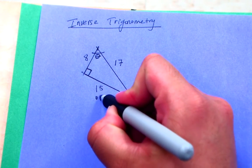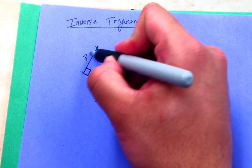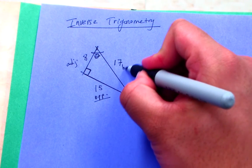So I'm going to label those just for clarity's sake. There's my opposite, my adjacent, again relative to this angle is 8, and my hypotenuse is 17.